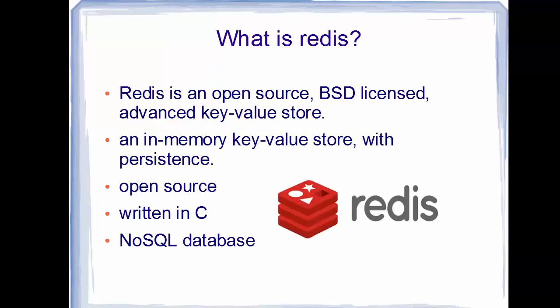Redis is an open source BSD-licensed advanced in-memory key-value store where keys can contain data structures such as strings, hashes, lists, sets, and sorted sets. It's an in-memory key-value store with persistence, which means Redis can be used as a database, a caching layer, or a message broker. Redis is written in C and it's a NoSQL database.